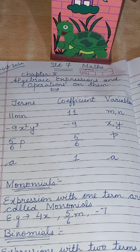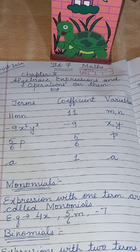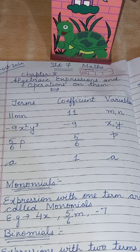See what I have written in terms: 11mn. Normally 11 is a number and mn is an alphabet, but in an algebraic expression 11 is a coefficient and mn is a variable. Next one: minus 9x²y³. Here minus 9 — take the sign also — is the coefficient, and the variable is x and y.